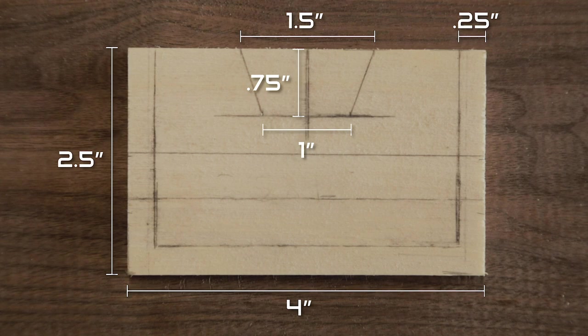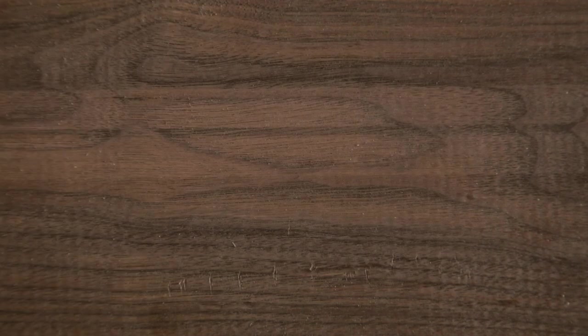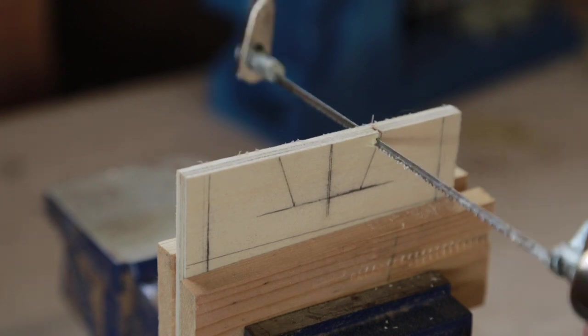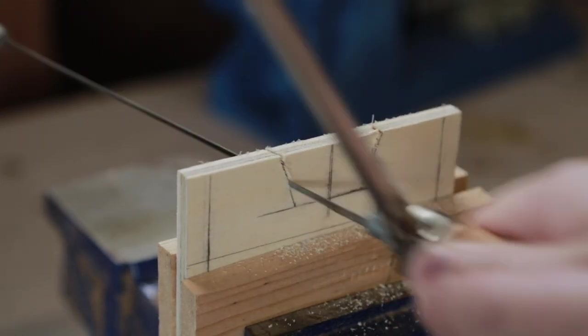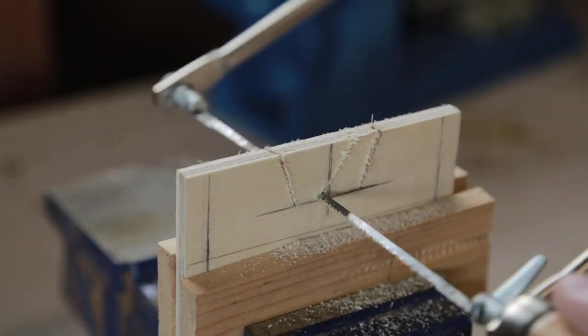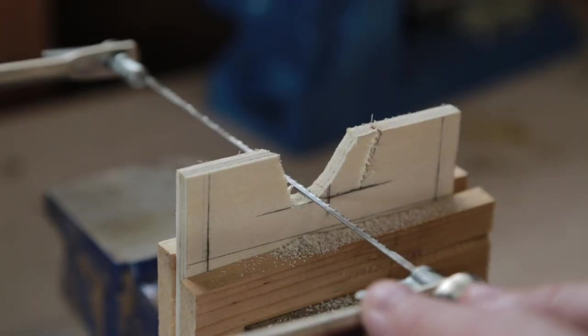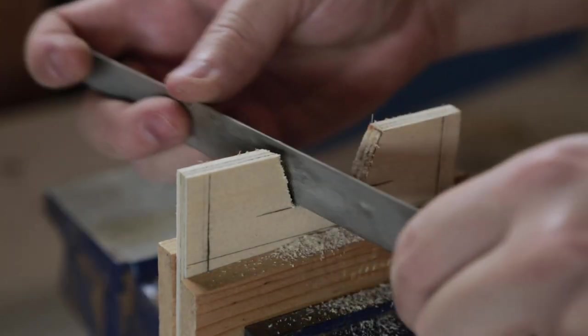These are the dimensions of the wallet in case you're planning on building this. To make this you really only need four things: a saw, a chisel, sandpaper, and a file. I used a saw to cut out the slot in the top, getting close to the lines and used a file to clean it up right to the line. This will make my template.